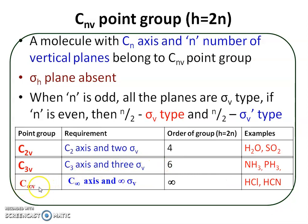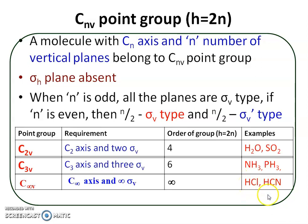The C∞V point group means the molecule must contain a C∞ principal axis and there are infinitely many sigma V planes passing through this C∞ axis. The order of the group is infinity. Examples are linear molecules — heteronuclear diatomic molecules like HCl, hydrogen cyanide, HBr, and HF.